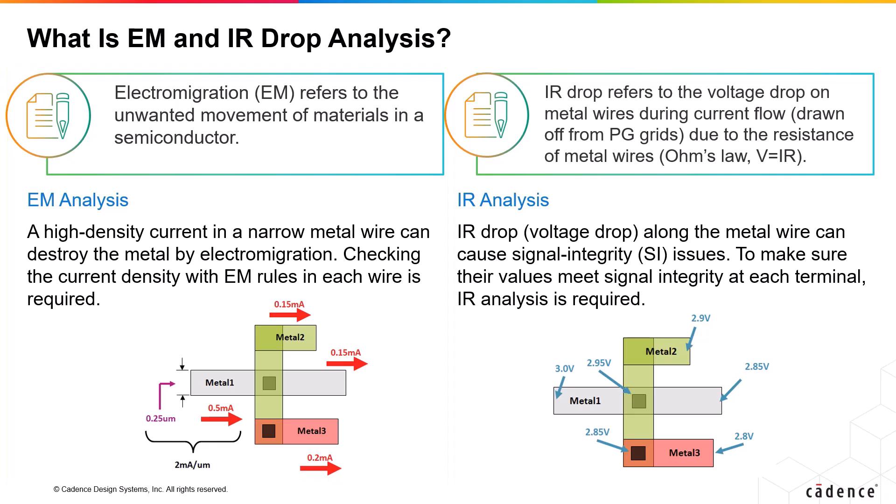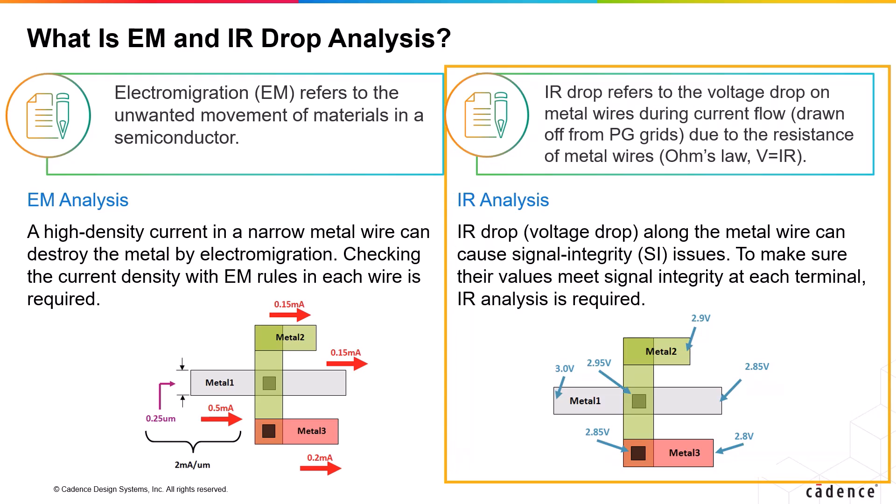Moving on — what is IR drop analysis? The power supply in the chip is distributed uniformly through metal layers across a design. Basically, the power supply includes both power as well as ground, generally referred to as VDD or VSS. These metal layers have a finite amount of resistance, and when voltage is applied to these metal wires, current starts flowing through the metal layers and some voltage gets dropped due to that resistance of the metal wires and current. This drop is generally known as IR drop.